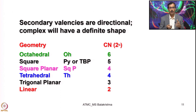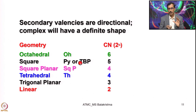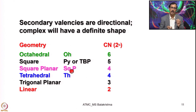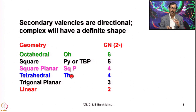Secondary valency is the coordination number. Based on coordination number, Werner proposed various geometries: when coordination number was 6, he proposed octahedral geometry without any ambiguity; for coordination number 5, both square pyramidal and trigonal bipyramidal; for coordination number 4, both square planar and tetrahedral depending upon the metal ions and type of ligands; for coordination number 3, trigonal planar; and for coordination number 2, linear geometry. All of this he established using quantitative analysis, excellent experimental skills, and conductivity measurements.